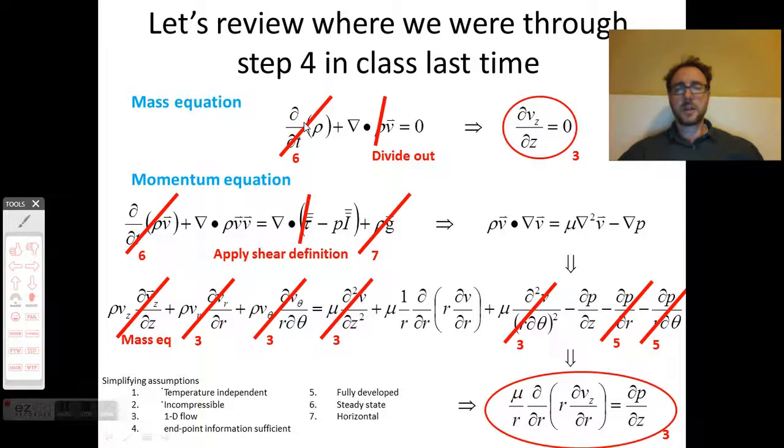We were able to simplify that by saying we're at steady state and that our density is constant, giving us the gradient of V equals zero. Recognizing from our symmetry conditions, one dimensional flow, that we have only flow in the z direction, we end up with dVz/dz equals zero from this equation. So we have no velocity in r and no velocity in theta.